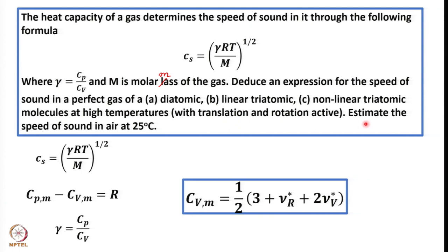We are also asked to estimate the speed of sound in air at 25 degrees centigrade, considering only translation and rotation active. According to the question, the speed of sound depends upon the heat capacity of a gas — that is, the speed of sound as it travels through a gas. The heat capacity is represented as the ratio of Cp and Cv, and we need to deal with diatomic, linear triatomic, and non-linear triatomic molecules at high temperatures.